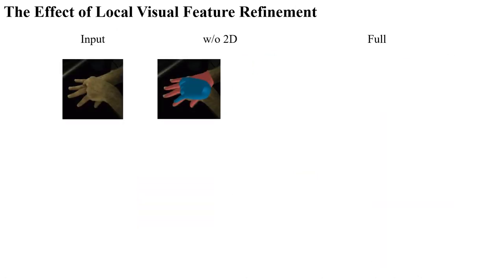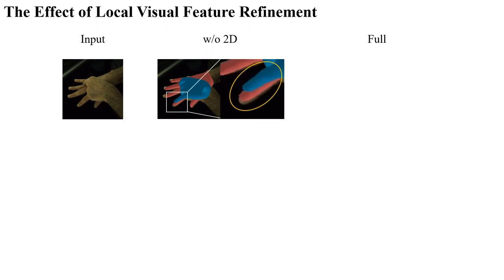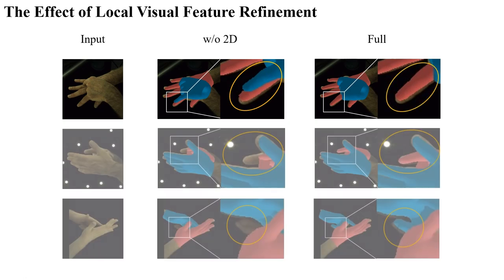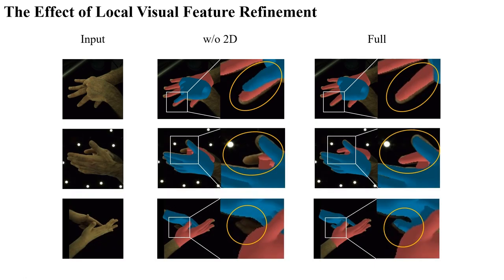Secondly, adopting local feature refinement in the 2D visual feature space can significantly alleviate the ambiguity of model estimation. At the same time, it enables the model to pay attention to some estimation errors caused by occlusion or dark regions. We evaluate our method on InterHand2.6M, the largest interacting hand dataset to date.